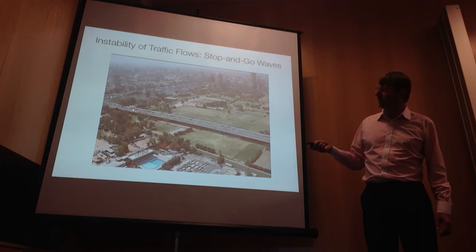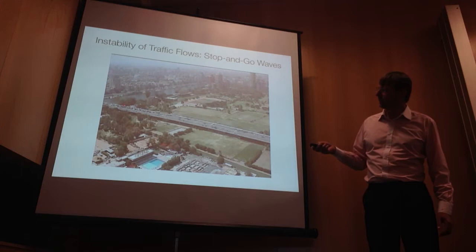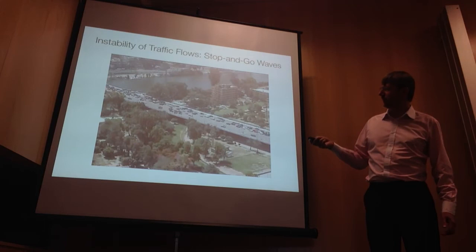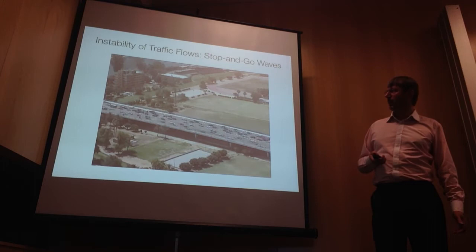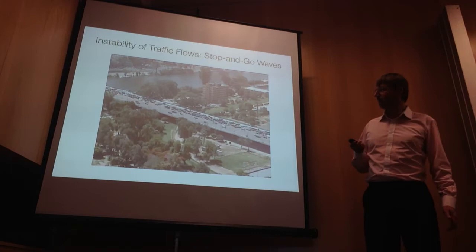There's no traffic light, by the way. There's just a few vehicles dropping in down there that create perturbations, and these perturbations are basically amplified through a cascade effect, and that creates the stop-and-go traffic. So people get stopped, although nobody wants this to happen.